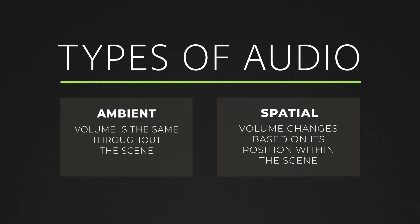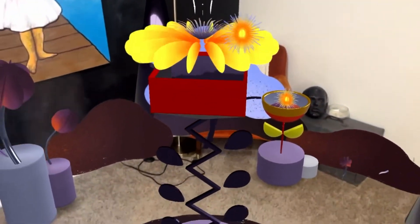There are two types of audio in AR. Ambient sounds, which are the same volume throughout the experience. So you would use this for like a soundtrack, for example. And spatial sounds, which are attached to specific objects within the scene and will change volume depending on where the participant is located within the experience.